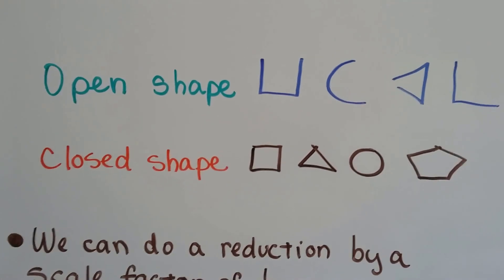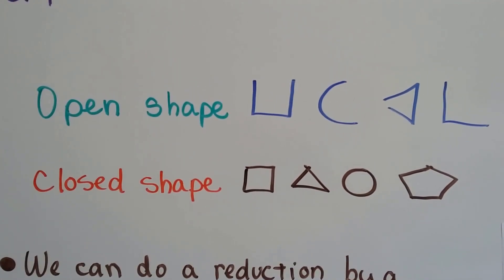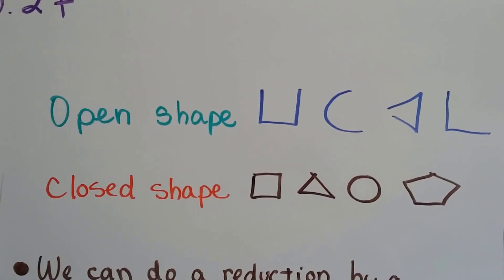So, open shapes, closed shapes. Open shapes are open - see, the lines don't connect. The line segments, their endpoints don't connect to each other.